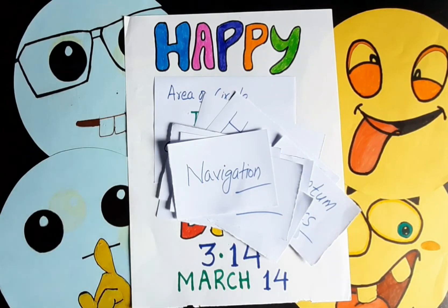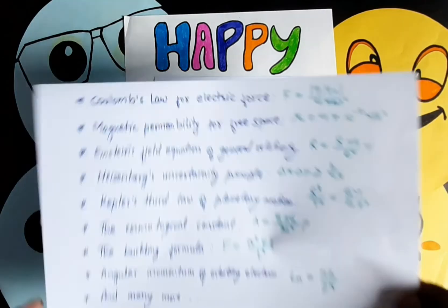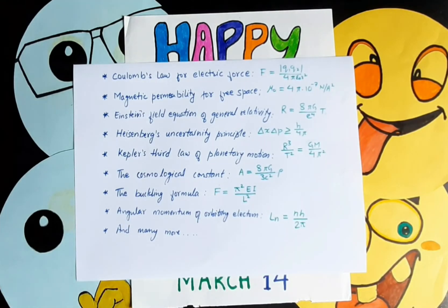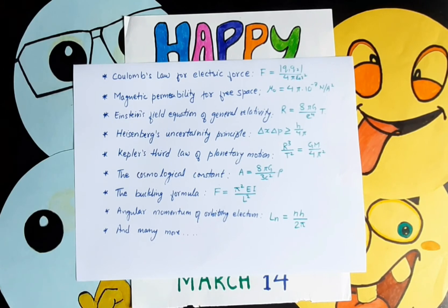In science, Pi appears in Coulomb's law for electric force, the magnetic permeability of free space, Einstein's field equations of general relativity, Heisenberg's uncertainty principle, Kepler's third law of planetary motion, the cosmological constant, the buckling formula, and the angular momentum of an orbiting electron — among many more equations.